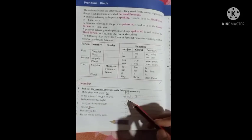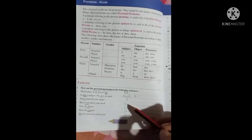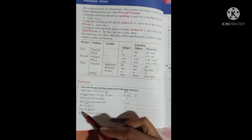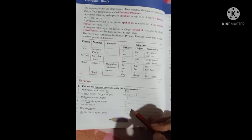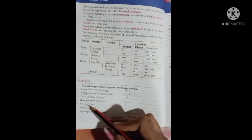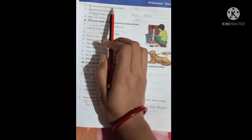Have you taken your meal? You. Yes sir, I have. I. How do you do? You. She has played a good game. She. So these are pronouns. Come to the next page.